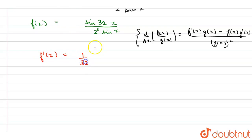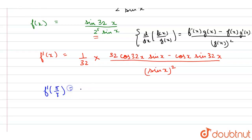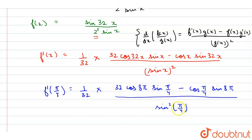f'(x) = (1/32) · [32 cos(32x) · sin x − cos x · sin(32x)] / sin²x. Now substituting x = π/4: f'(π/4) = (1/32) · [32 · cos(8π) · sin(π/4) − cos(π/4) · sin(8π)] / sin²(π/4).